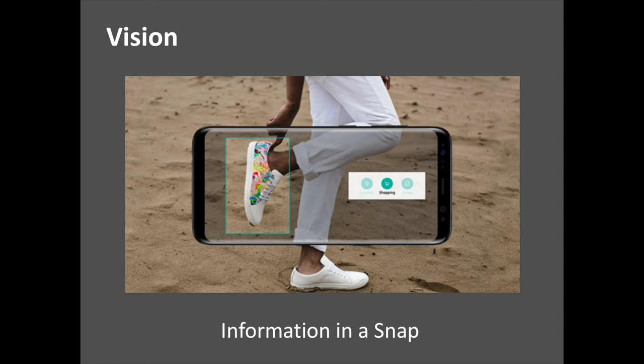Vision can be activated to read QR codes and, in select markets, barcodes that direct users to related information.